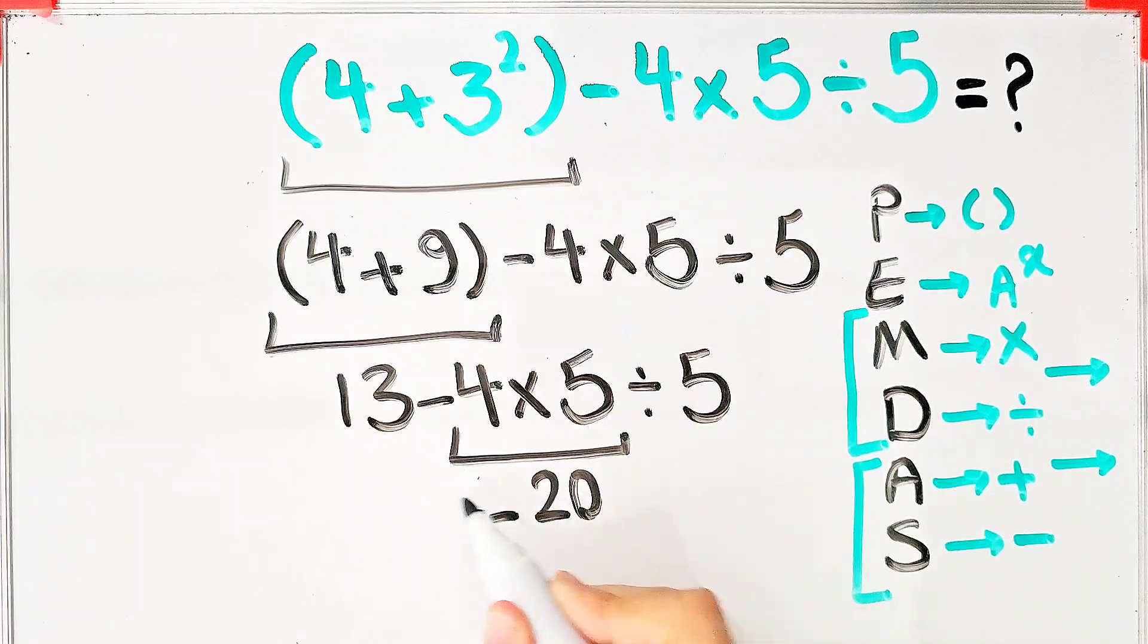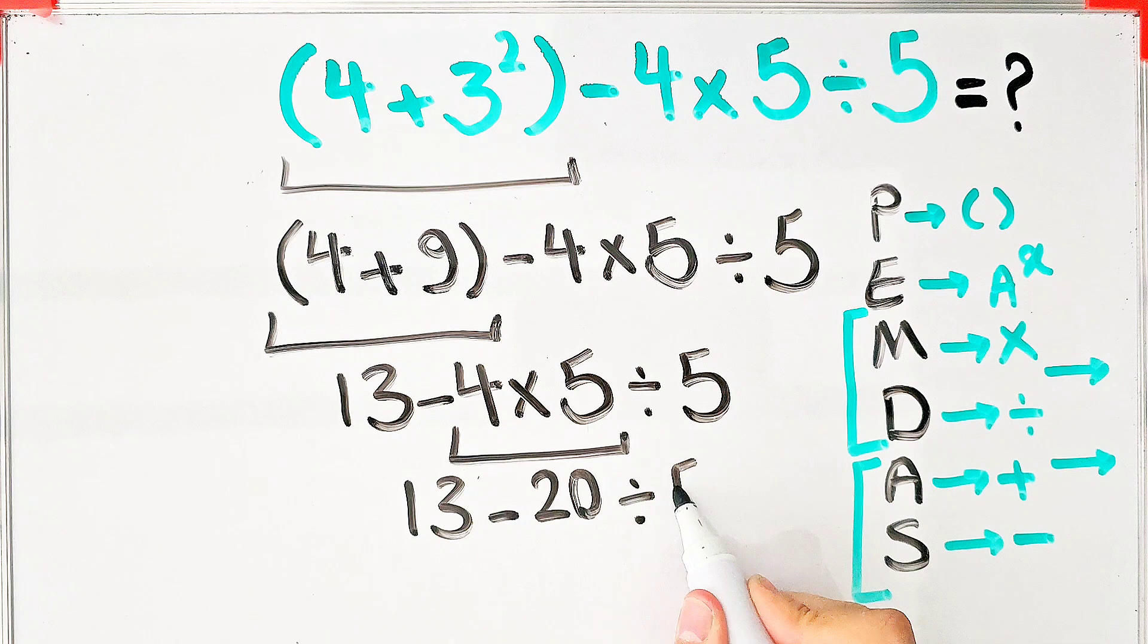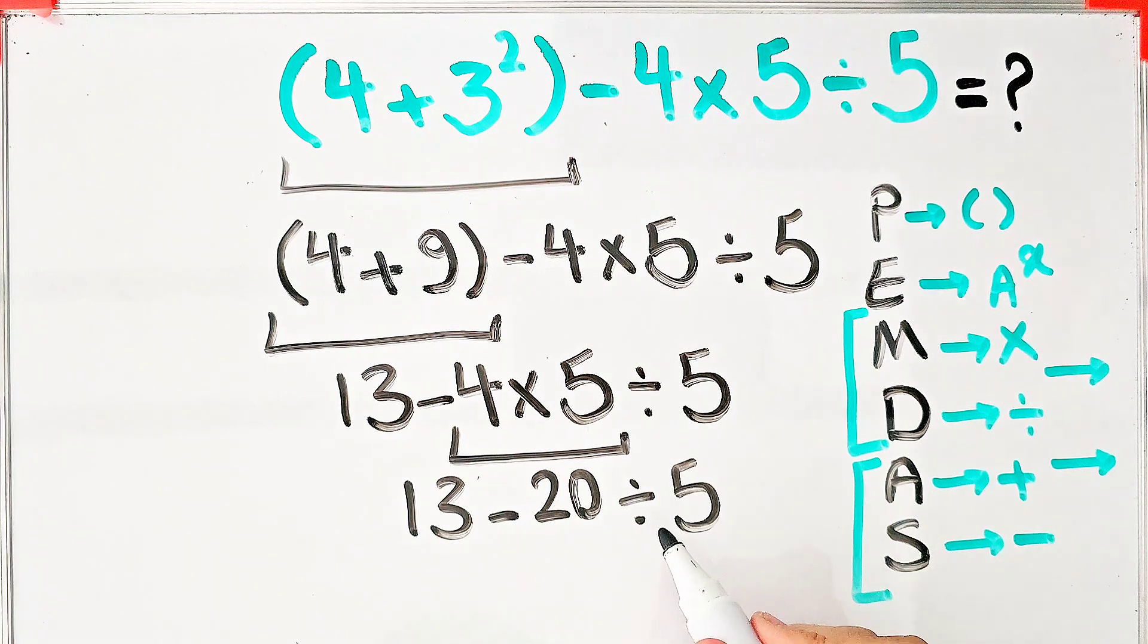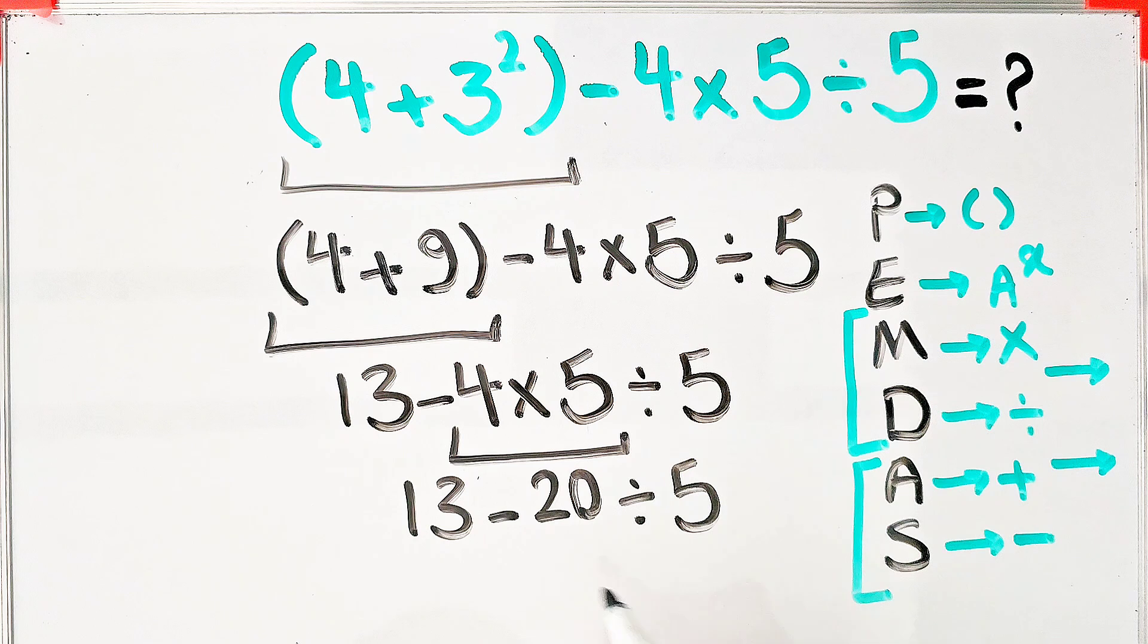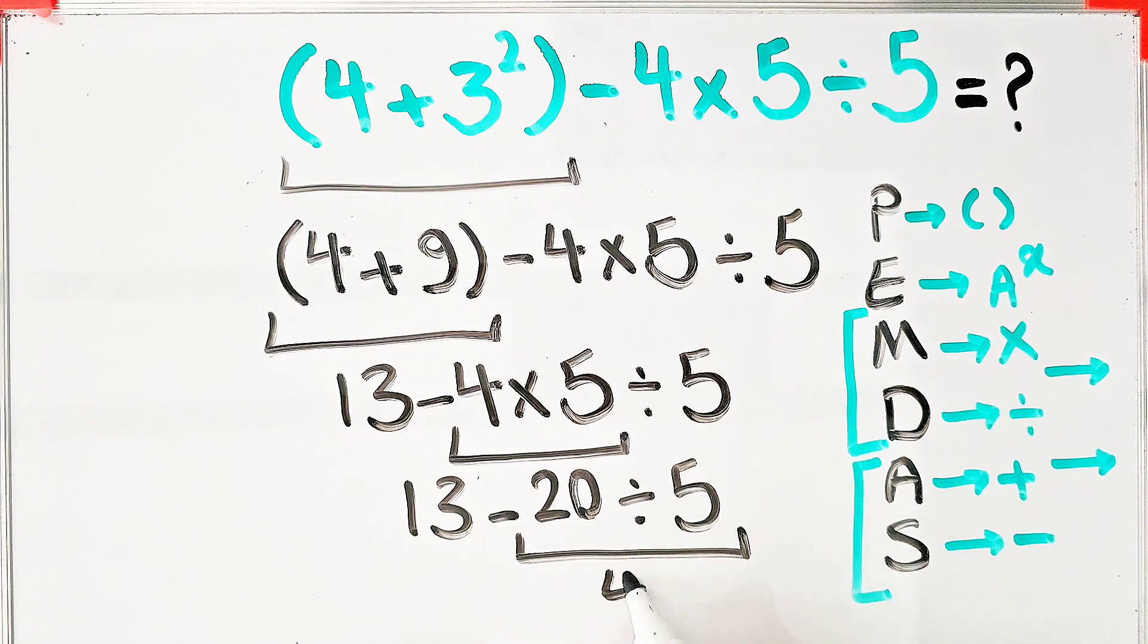Now we have 13 minus 20 divided by 5. In this step, we do this division, because the division has higher priority than subtraction. Negative 20 divided by 5 equals negative 4.